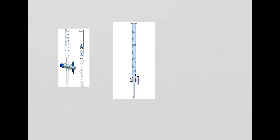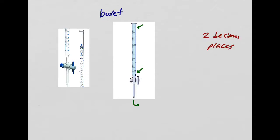The last one is a burette. You're going to have a titration later on and you're going to use a burette — we'll talk about it more then. It's graduated, starts from zero on top and goes to 50 at the bottom. You drain it and you can read how much you have drained and added to your solution. A burette is also good to two decimal places, so if I measure 10 mL, that means I have 10.00 mL — two decimal places.